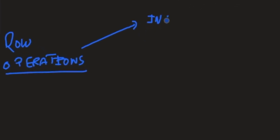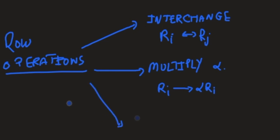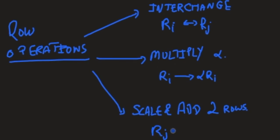You're allowed to interchange two rows — for example, interchange row I with row J. So if we have row 1 and row 2, you can flip them and the solution remains intact. You're also allowed to multiply a row by a scalar alpha: instead of row I, you can assign the value alpha times R_I. And one last thing — you're allowed to scale and add two rows. That is, instead of row J, you can put alpha R_J plus beta R_I. You grab two rows, multiply each by a non-zero real number, add them up, and place the result in one of the two rows. Alpha and beta should not be zero.